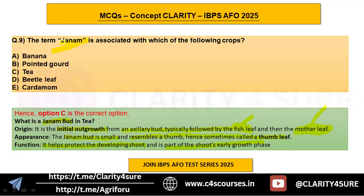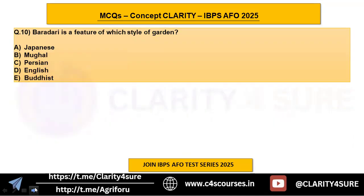Typical terminologies related to different crops might be asked — either a description may be given, or the term is given and you identify the crop. For example, in one year they asked: CTC is associated with which crop — and the answer is tea. Similarly, janum is associated with which crop is a new term introduced here.